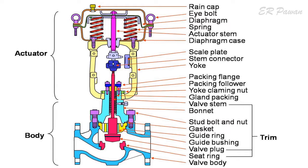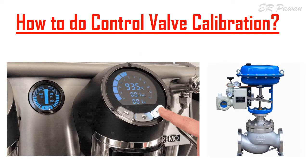Manual calibration and auto calibration are the two common types of control valve calibration. Control valve as an actuator in a control loop operation has an important role in the whole process.